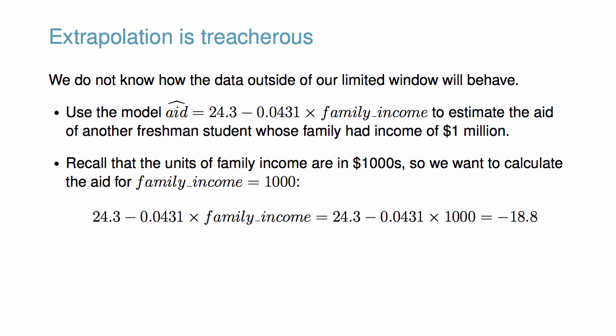Incredibly, the model predicts that this student will have negative $18,800 in aid. However, this makes no sense because Elmhurst College cannot, or at least does not, require any students to pay extra on top of tuition to attend.